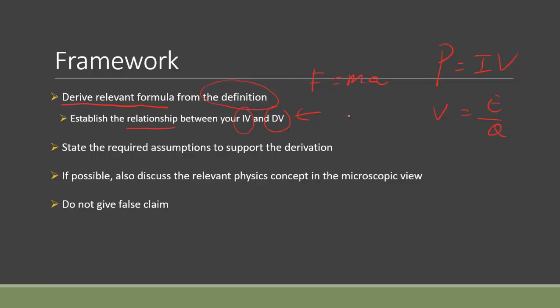Ideally, you can establish the relationship between your independent variable and dependent variable as seen in your research question. If you don't know how to derive it yourself, find the relevant formula from other researchers and see how they proved it, or search for it — there is usually a way people prove it. If the formula truly comes only from experiment, find multiple sources and check for differences.